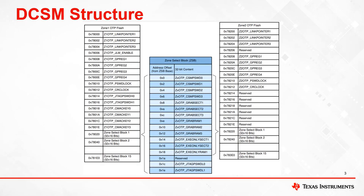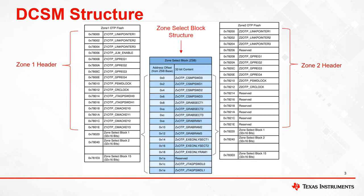Security settings are programmed in specific regions of user OTP. Settings for zone 1 are programmed between addresses 78,000 and 78,200, while settings for zone 2 are programmed between addresses 78,200 and 78,400. For each zone, security settings are split between the zone header and the zone select block. The key difference is that most settings in the zone header can only be configured once, while settings in the zone select block can be configured multiple times.